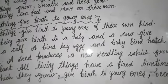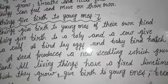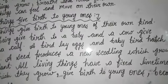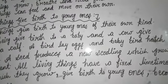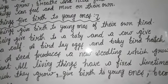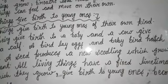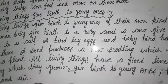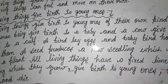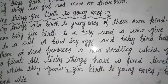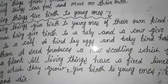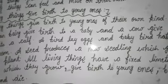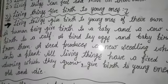ये features हम अपने पिछले lecture में read कर चुकी हैं. Human beings का जो baby होगा, वो human beings की तरह ही होगा. Cow, buffalo — इनके जो babies होंगे, वो इन्हीं की तरह होंगे. तो जो living things होती हैं, वो अपने जैसे babies को जन्म देती हैं.